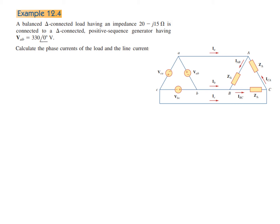We start with an example: a balanced Delta connected load having a given load impedance, connected with a positive sequence generator VAB = 330∠0°. The voltage and impedance are both given. We have to calculate the phase current of the load and the line current. Since we know voltage V and impedance Z, we can calculate IAB, which is the phase current.